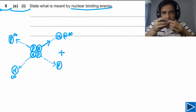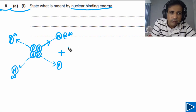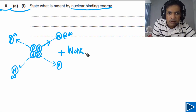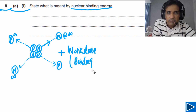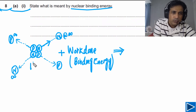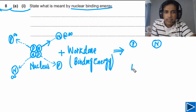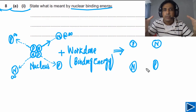The amount of work done to separate these nucleons equals the binding energy of this nucleus. The work done by an external agent equals the binding energy. We can redraw the diagram showing the nucleus on one side and the separated nucleons — two protons and two neutrons — on the other side.